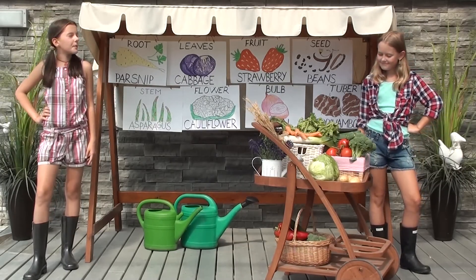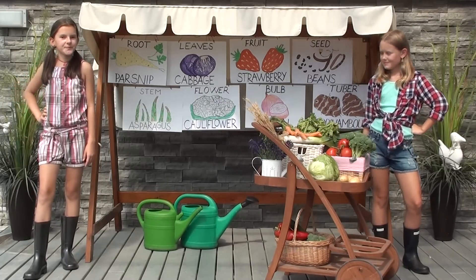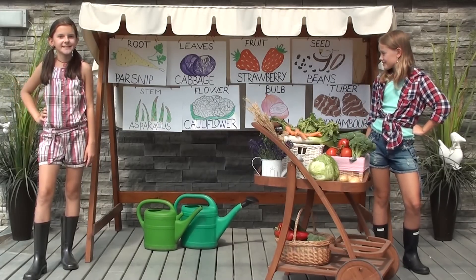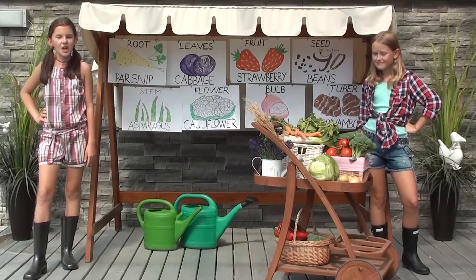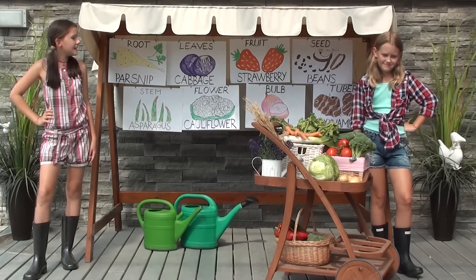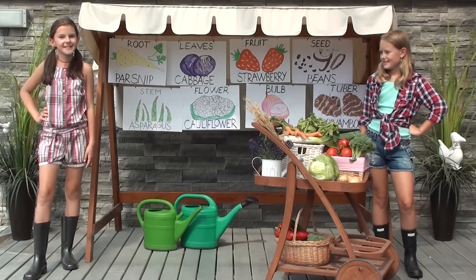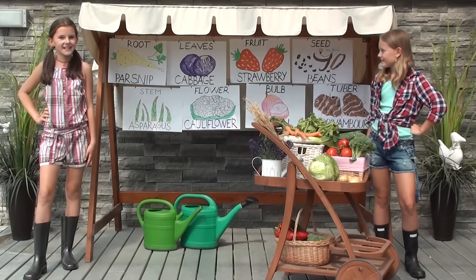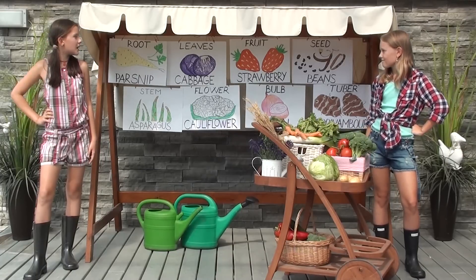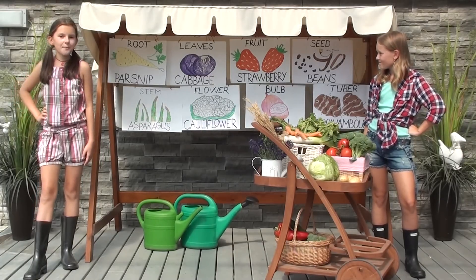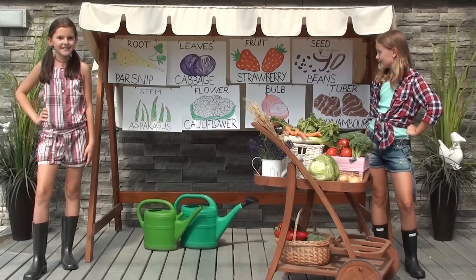Which part of the plant does the palm snip come from? The palm snip is the root. Which part of the plant does the asparagus come from? The asparagus is the stem. Which part of the plant does the cabbage come from? The cabbage is the leaves.